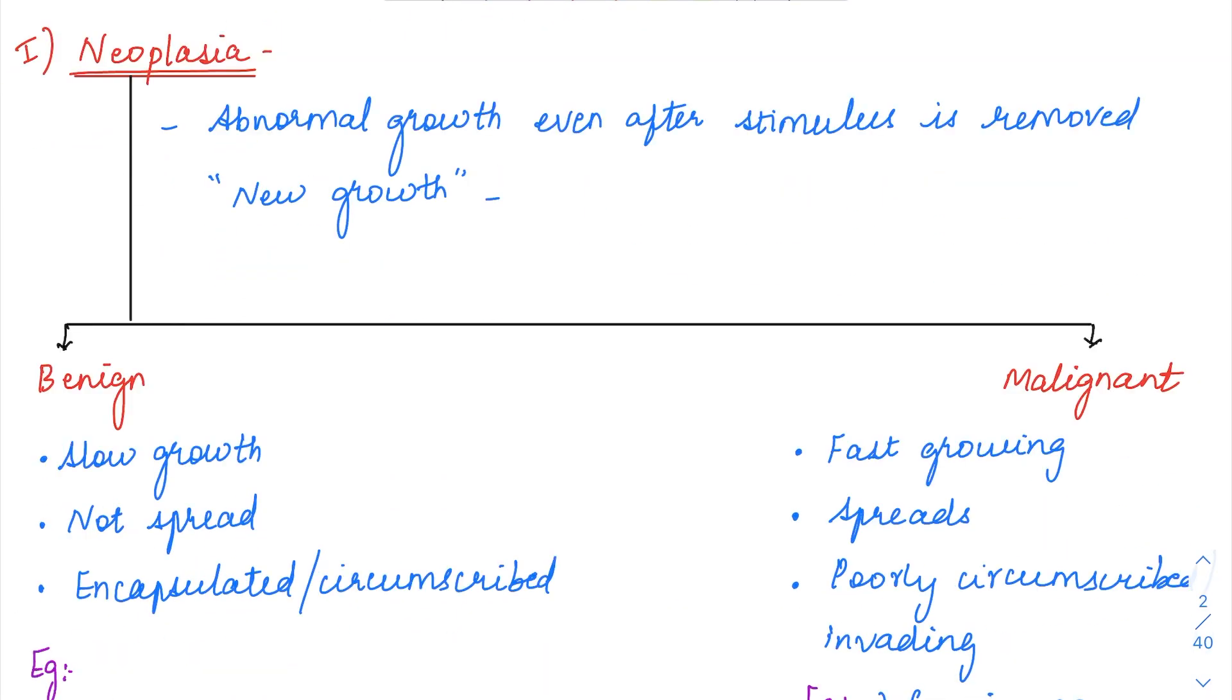Starting with neoplasia. What does neoplasia mean? Neo means new, plasia means growth. It literally means new growth. There is going to be abnormally new growth which is not responding to a stimulus. Even after a stimulus has been removed, it is still continuously growing. Proper response to a stimulus is not there, it is just growing by itself.